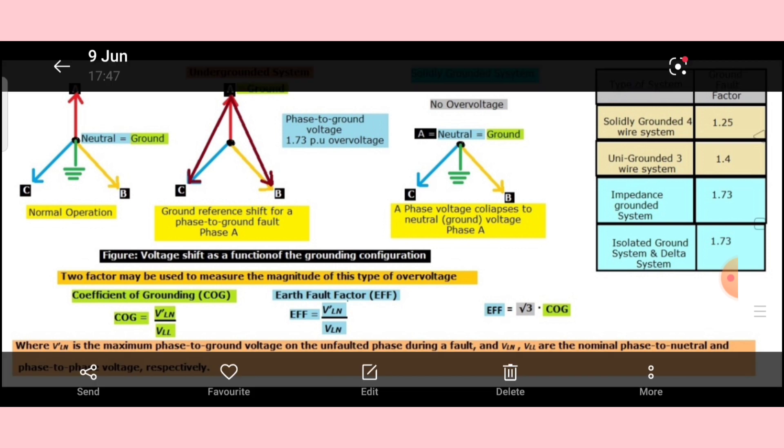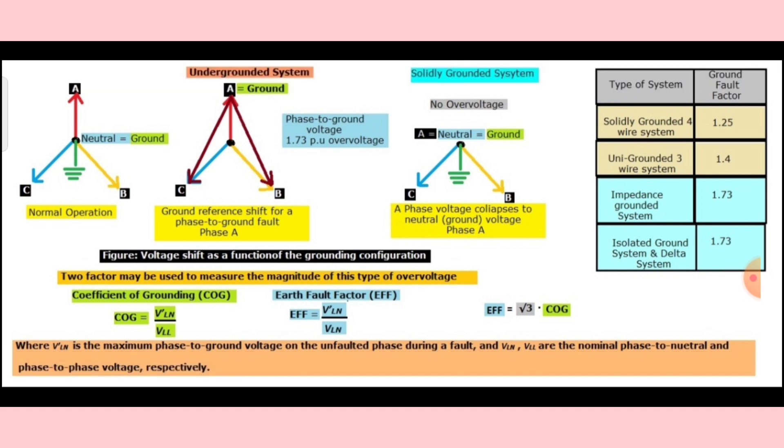I have given the same information in the table. Typical values for the earth fault factor are: solidly grounded 4-wire system is 1.25, ungrounded 3-phase 3-wire system is 1.4, impedance grounded system is 1.73, and isolated ground system and delta system are 1.73.